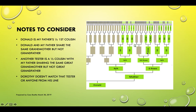From there, Dorothy could be related to either the third great-grandfather or the third great-grandmother. All the other green boxes I've put NA on are no longer applicable since that branch was eliminated. We're only going up this one line.